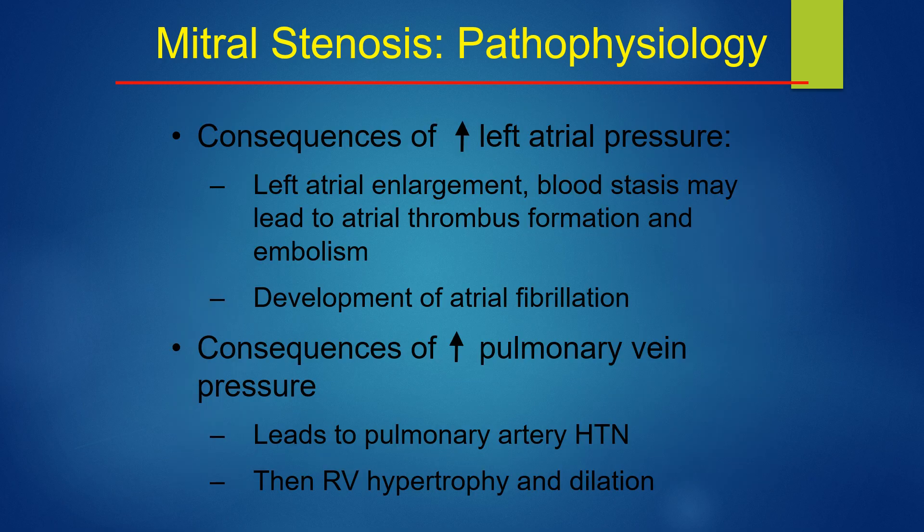The consequences of mitral stenosis include increased left atrial pressure and left atrial enlargement. Blood stasis may lead to atrial thrombus formation and embolism, and development of atrial fibrillation. The increased pulmonary vein pressure leads to pulmonary artery hypertension, then right ventricular hypertrophy and dilation.